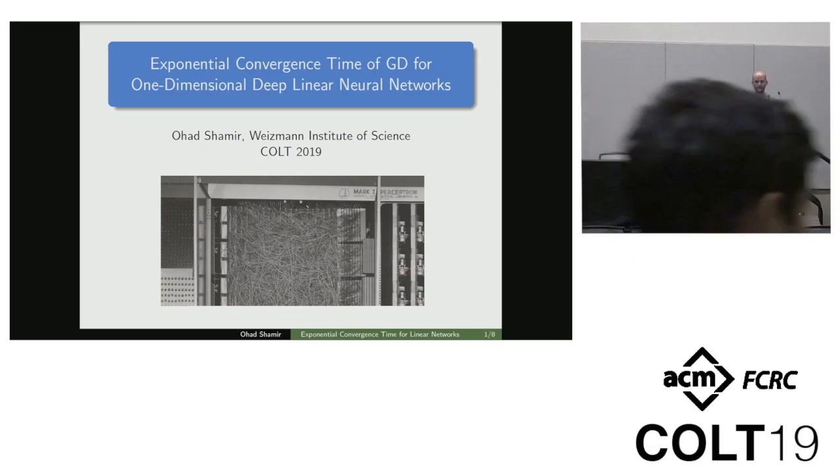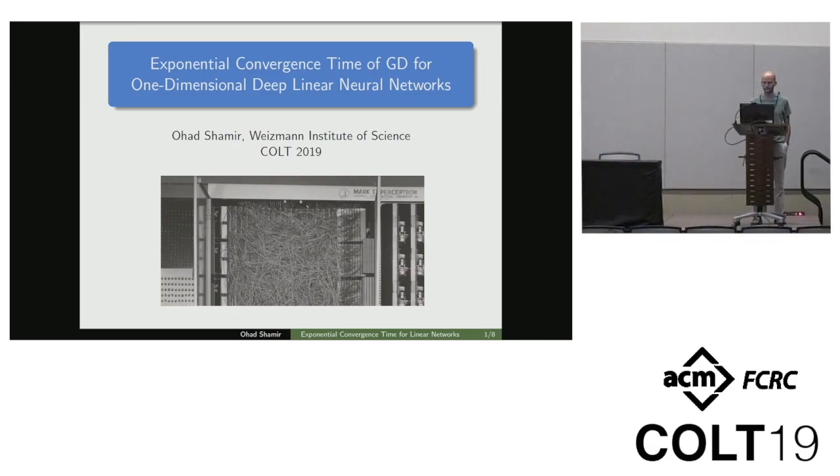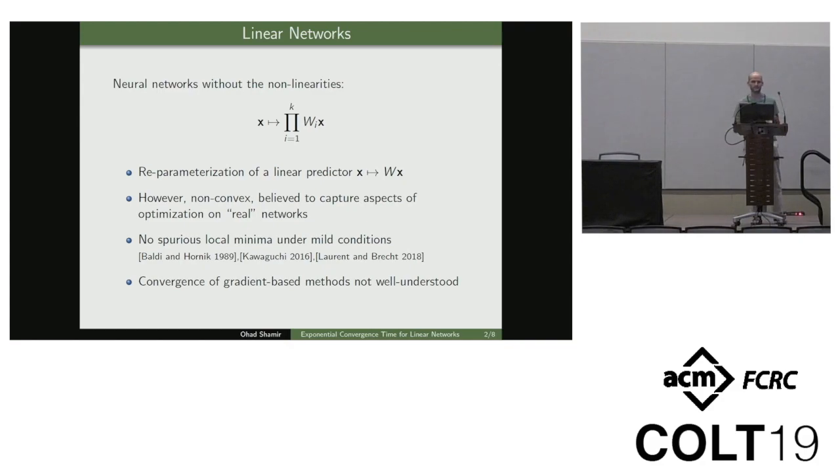Okay, thanks. So this paper is about linear networks, which is a very simplified neural network model, where basically we take a vanilla feedforward neural network and remove all the nonlinearities. So what we are left with is basically a function of the form X maps to X times a product of K matrices where K is the depth.